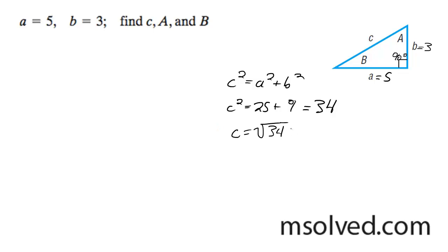So now that we have that, what we can do is find out what the angles are. So for angle B, sine B is going to be equal to 3 over the square root of 34.